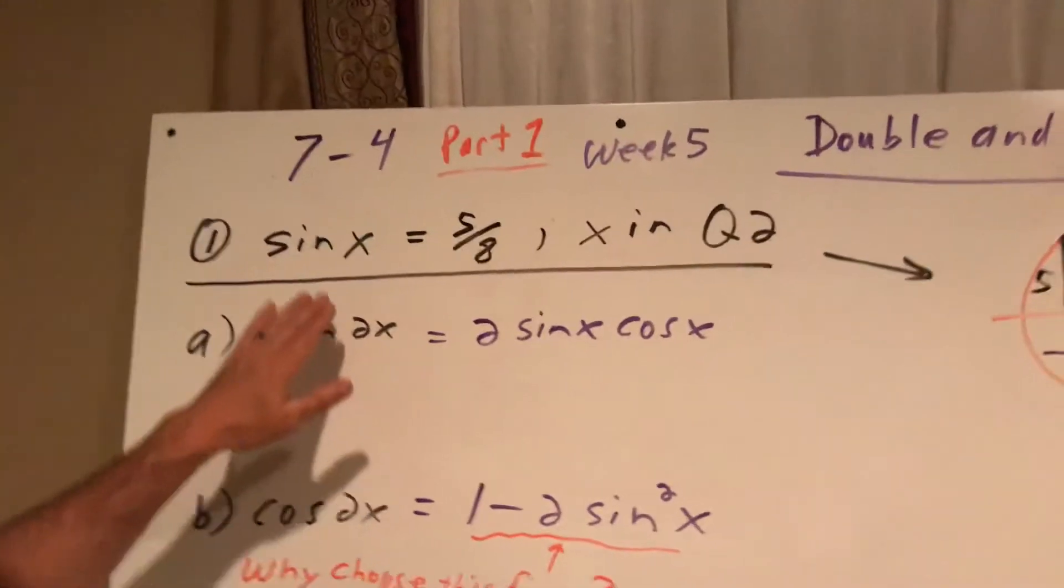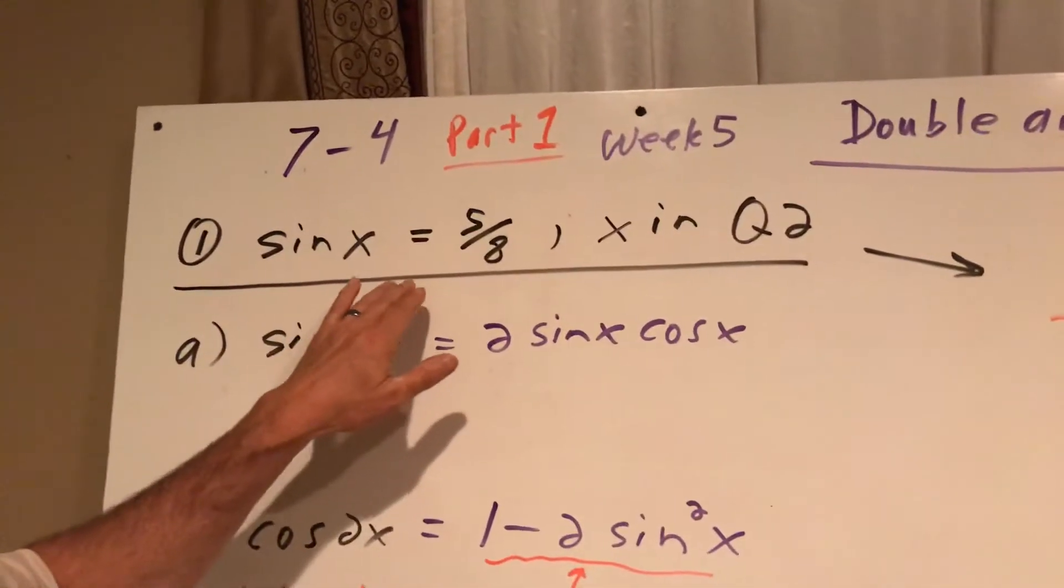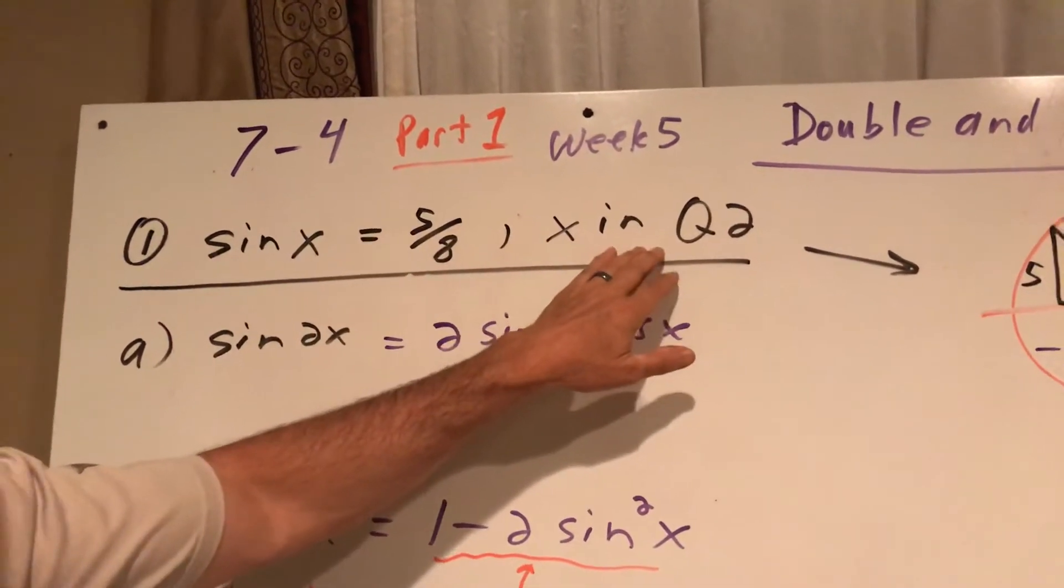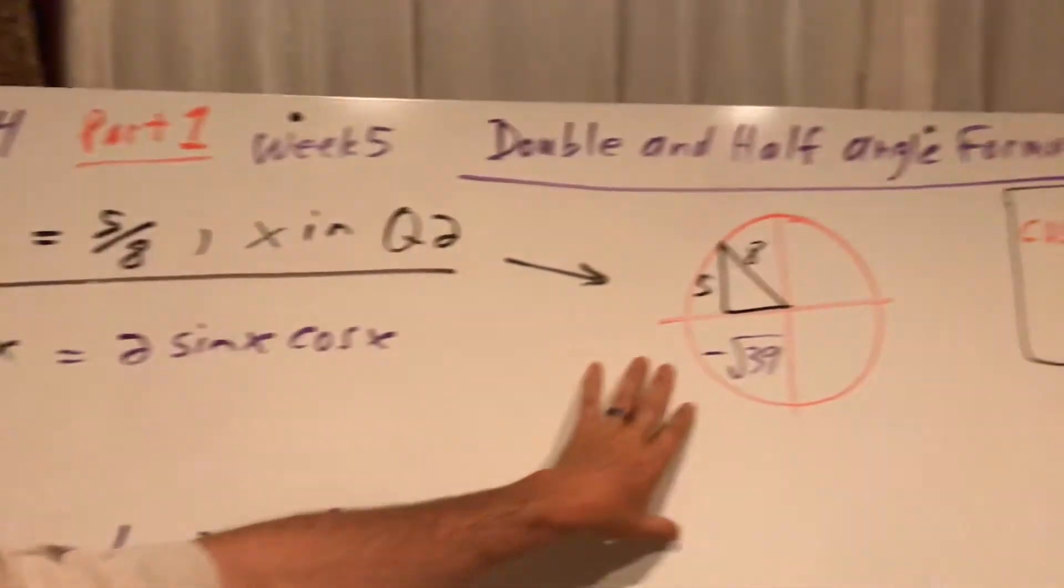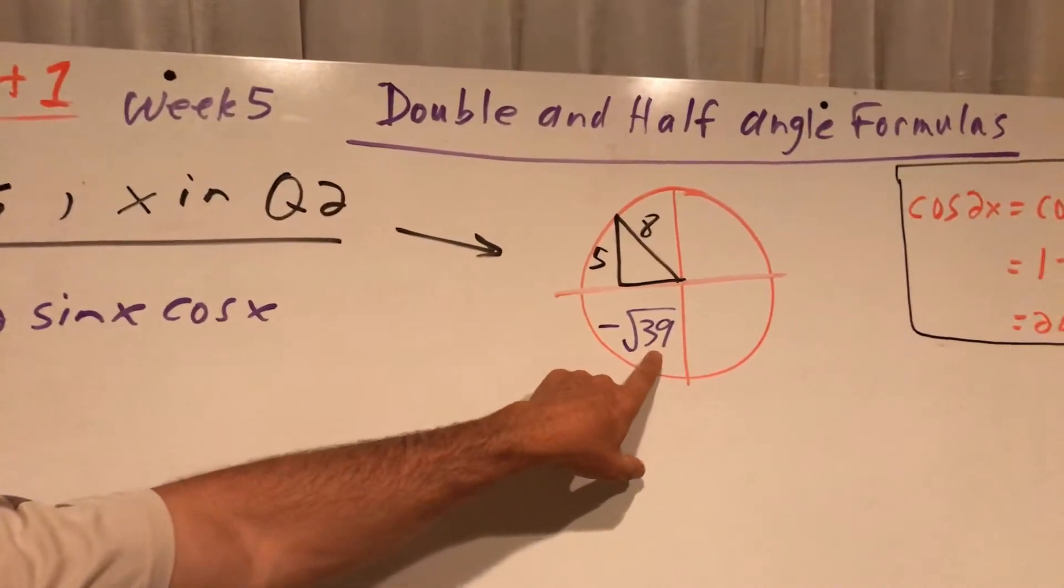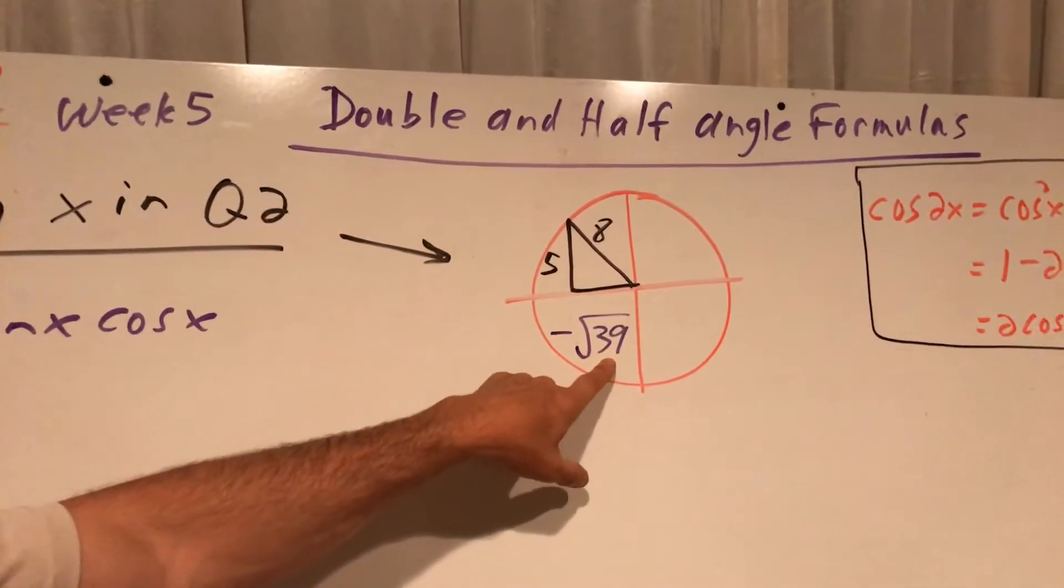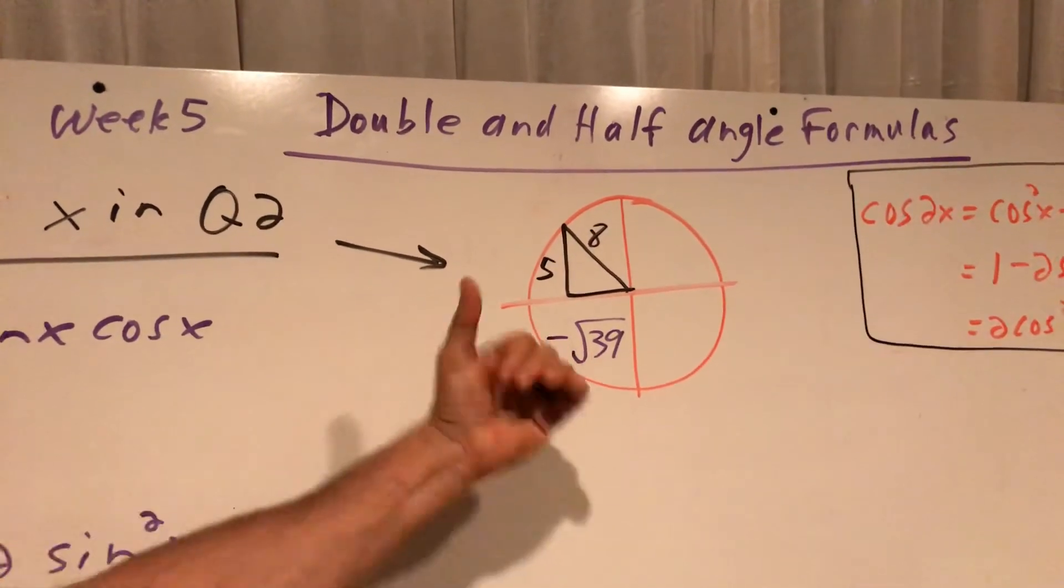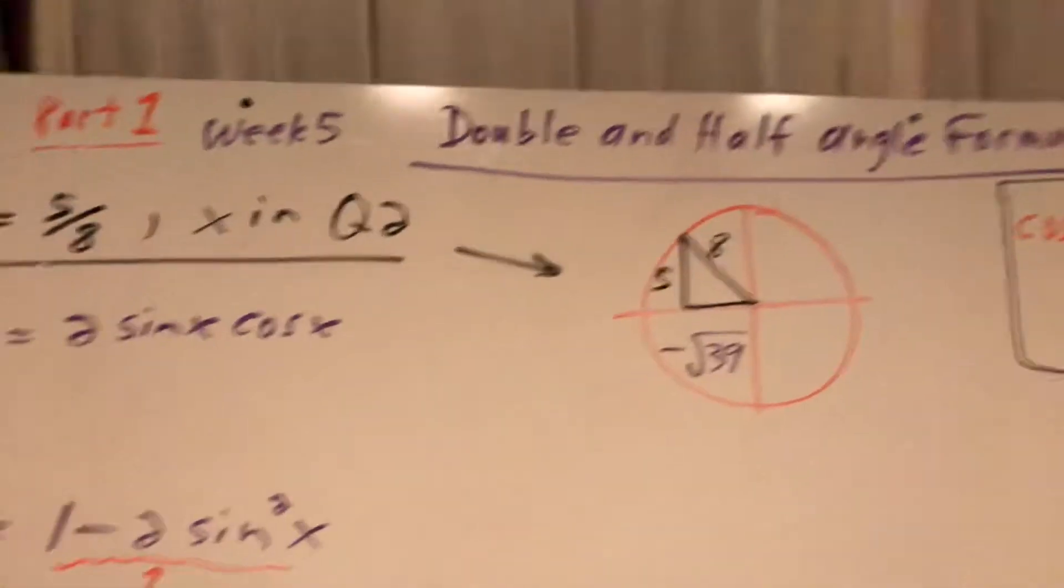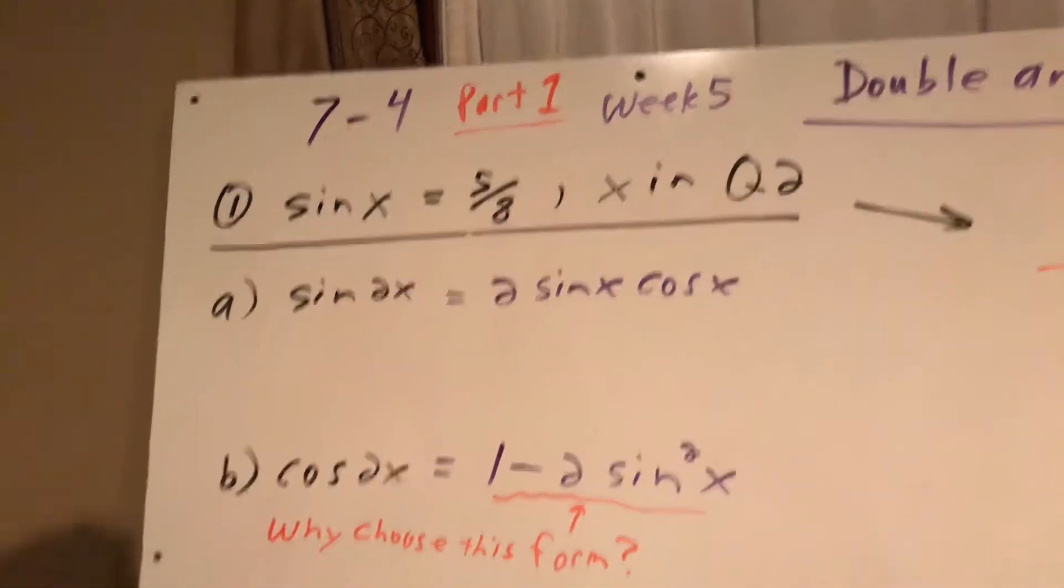Alright here is our problem. It's given to us that sine of x is 5 over 8 and x is in quadrant 2, so I've gone ahead and drawn my circle, done Pythagorean theorem, and found the value for x in this problem, which is negative root 39, and notice that it's negative because it's going to the left, so you'd have to pay attention to that. Your Pythagorean theorem won't tell you that. We have three parts A, B, and C.